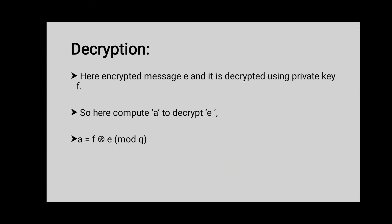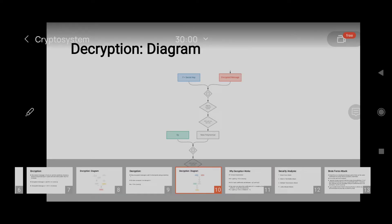Now Bob has received Alice's ciphertext E. Bob can use his private key to decrypt it. The first step of decryption is to calculate a polynomial A such that the coefficients of A are chosen to be between -Q/2 and Q/2 to avoid decryption problems. To decrypt the message, Bob uses his other secret polynomial FP to obtain the message M. Here is the diagram of decryption.